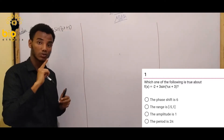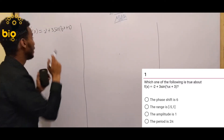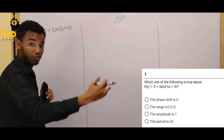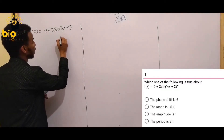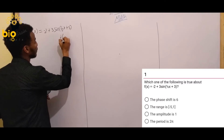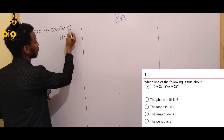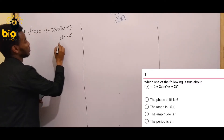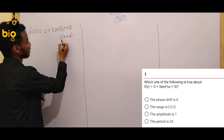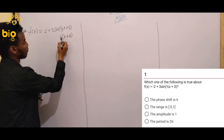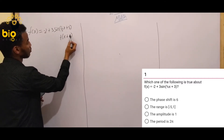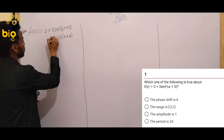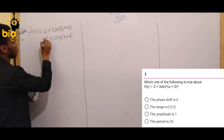For the x inside, we look at the phase shift. The face shift is determined by the value inside. Here, one over two — so we have one over two x. Then one over two times six gives us the face shift value.